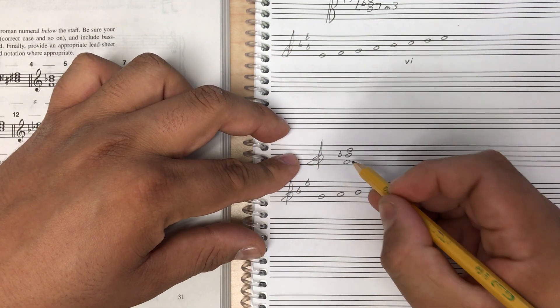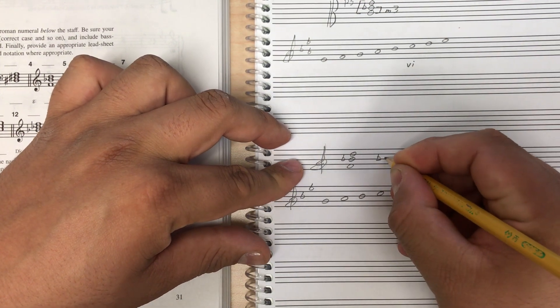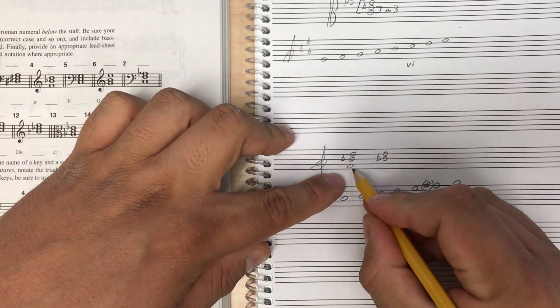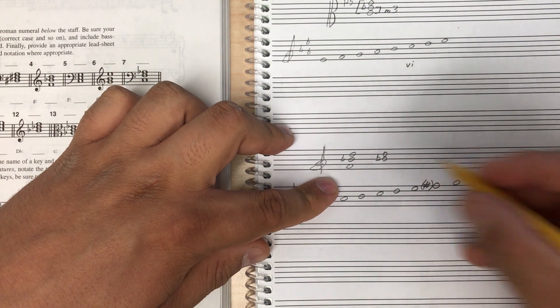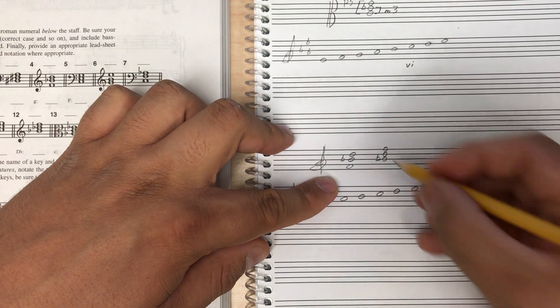So first step, we have to rewrite this so that it's a snowman. So I'm going to keep these two notes on lines, B flat and D. And then for this F, I'm going to find an F that is on a line. Well, there's an F up here. So that makes a nice neat snowman.